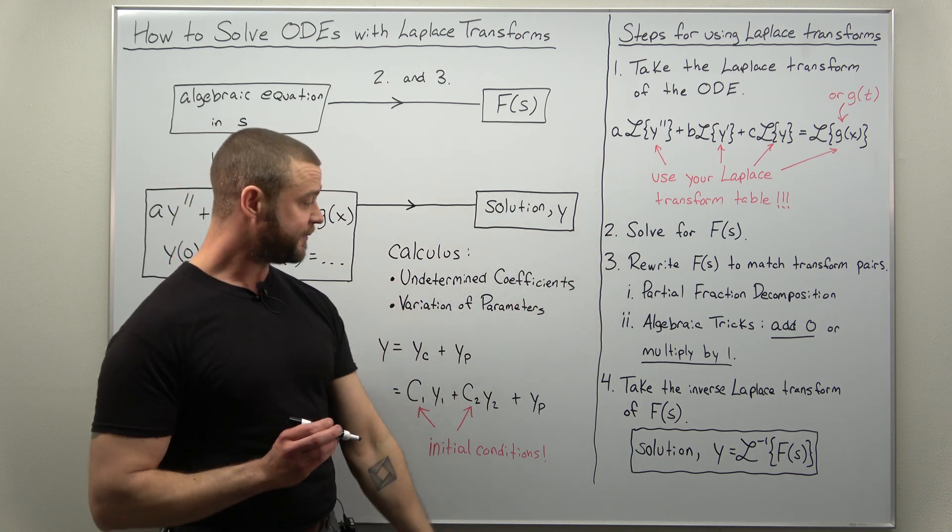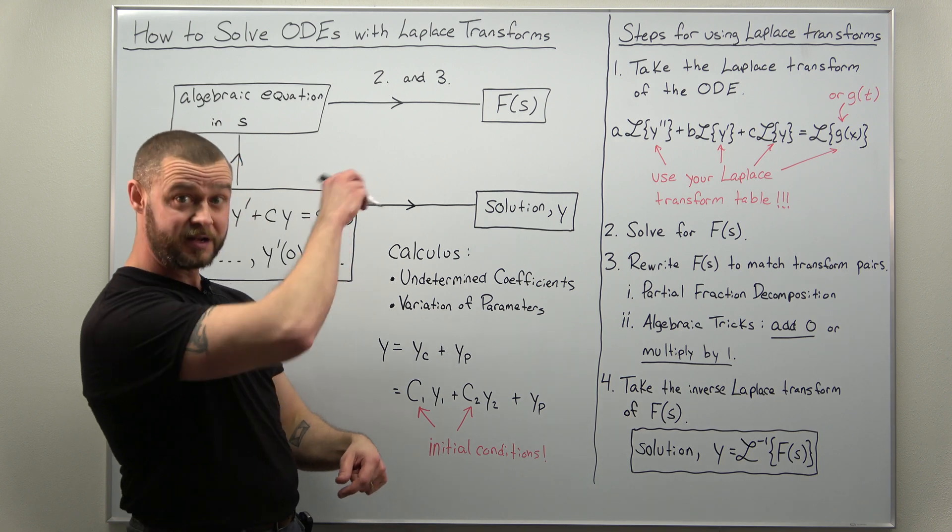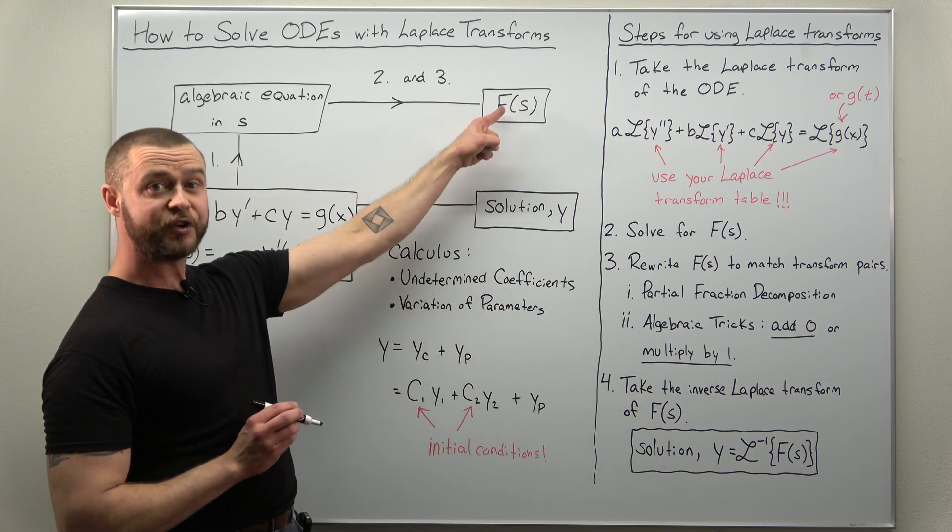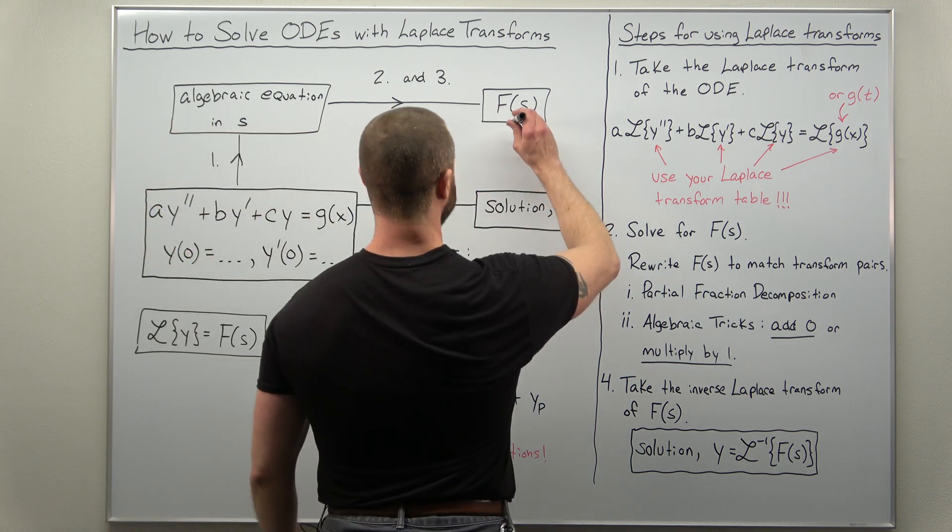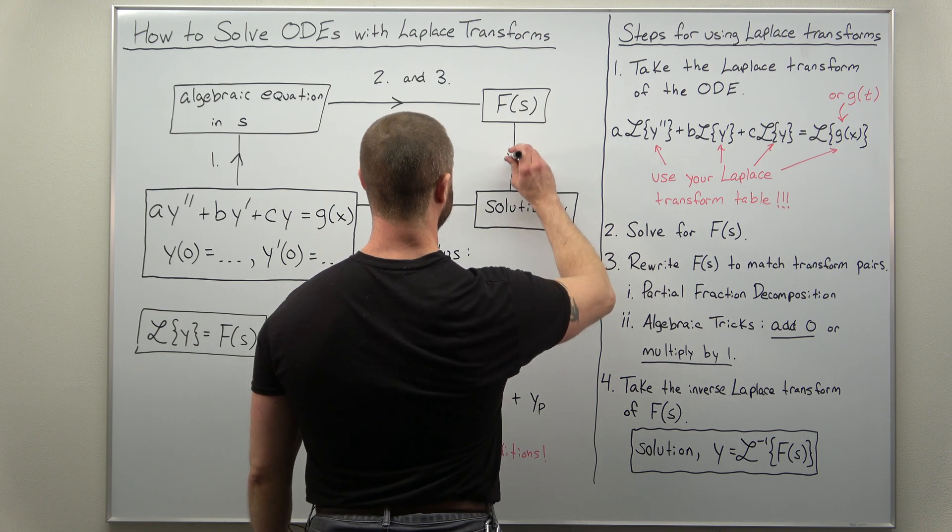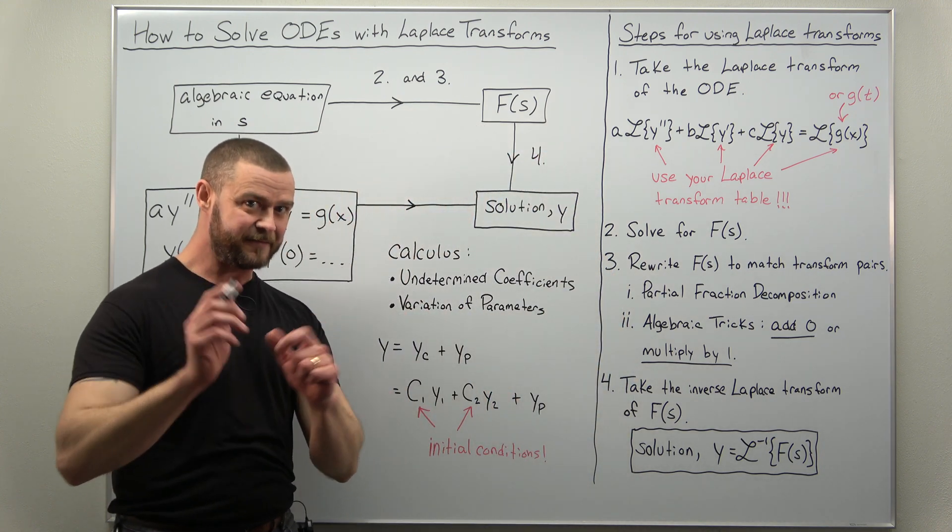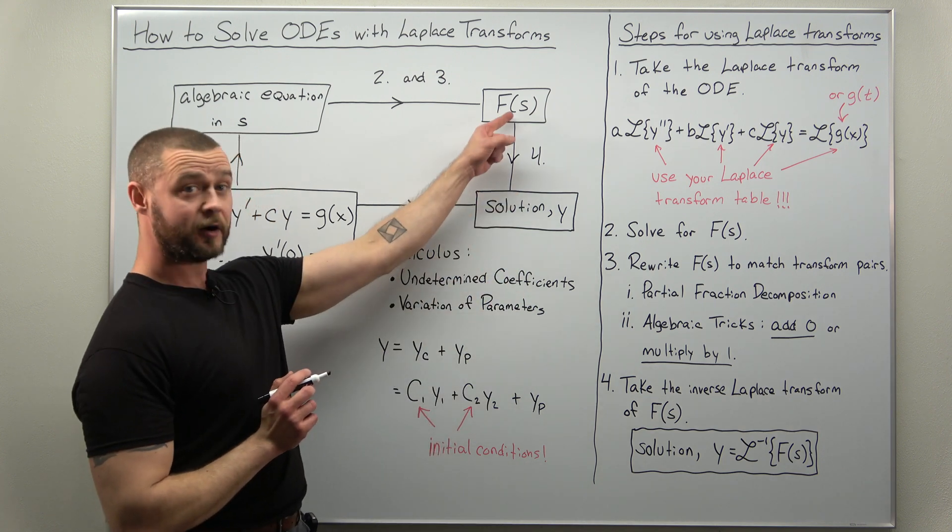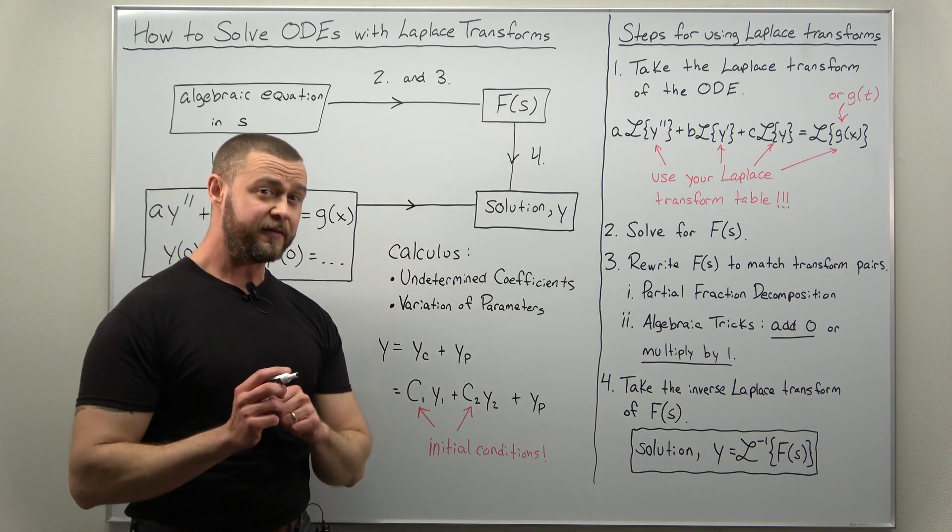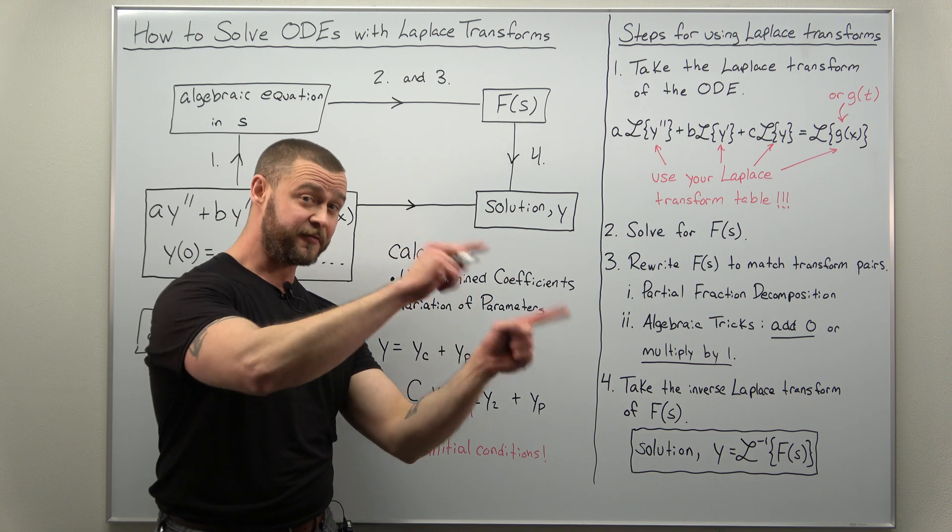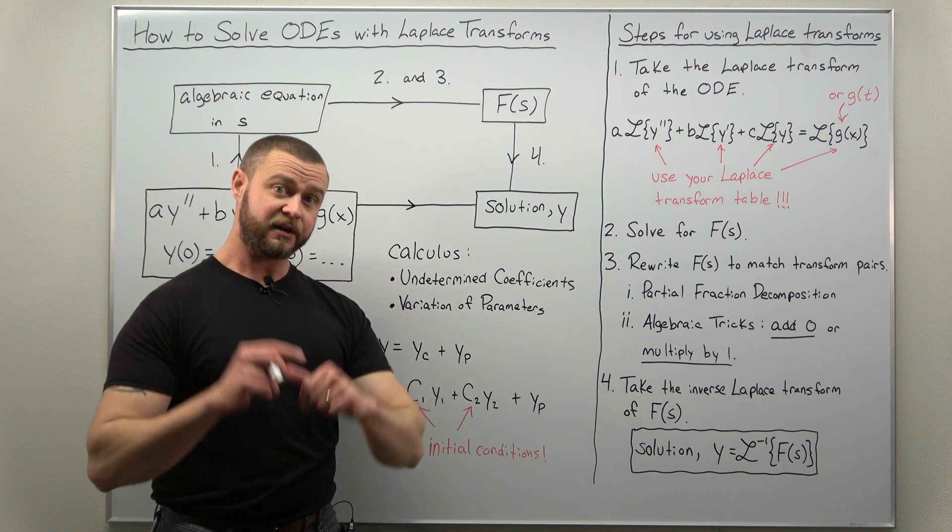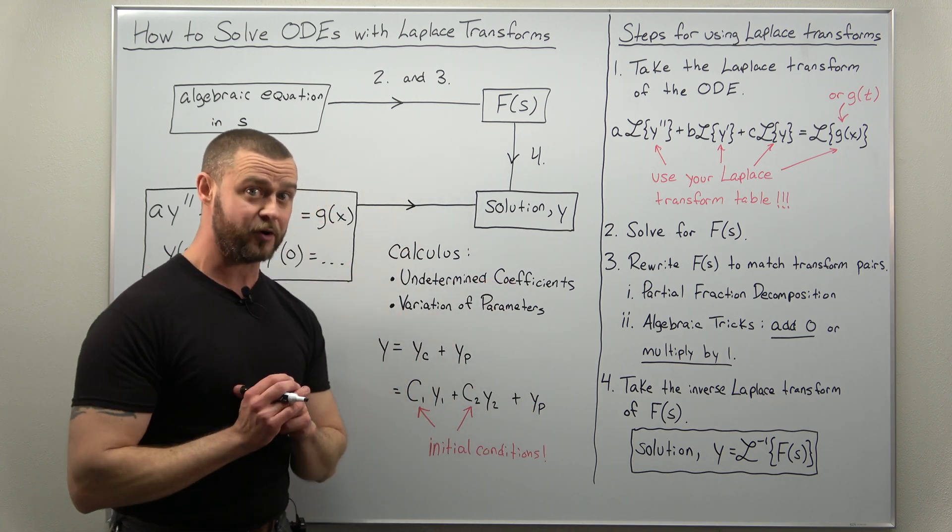So step four, the last step in our indirect solution method here, we just go from F of s to our solution by taking the inverse Laplace transform of F of s. F of s is your solution in the frequency domain. We want to get our solution in the time or x domain.